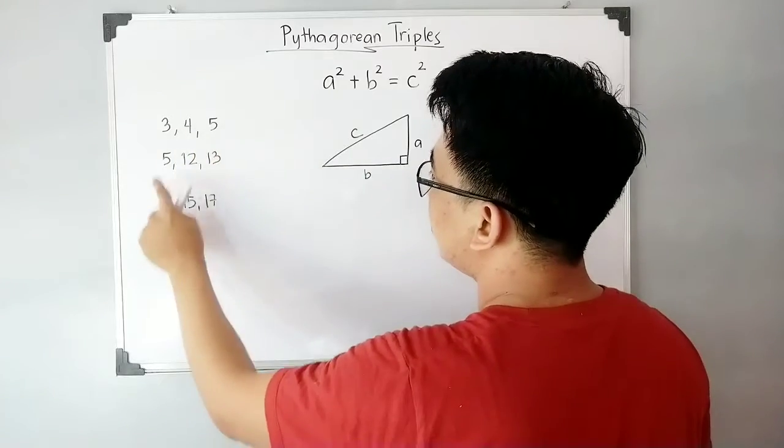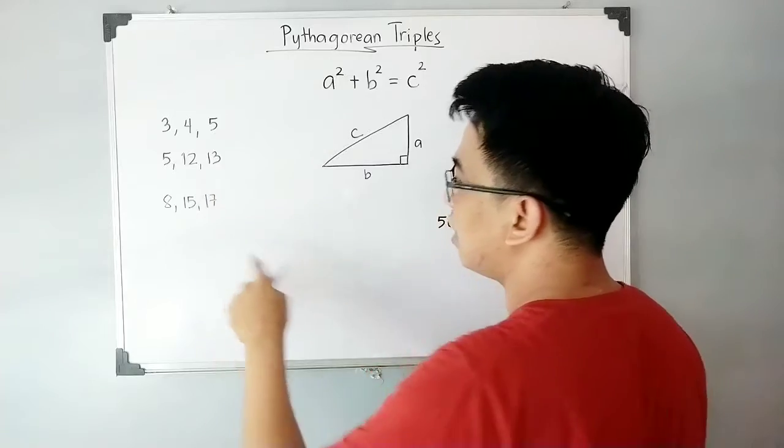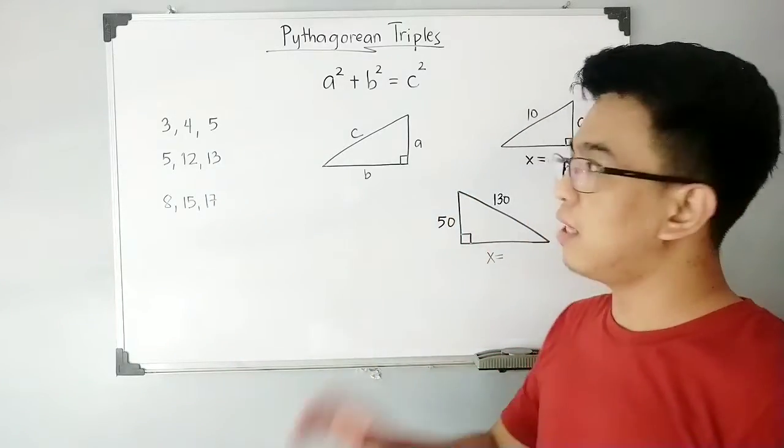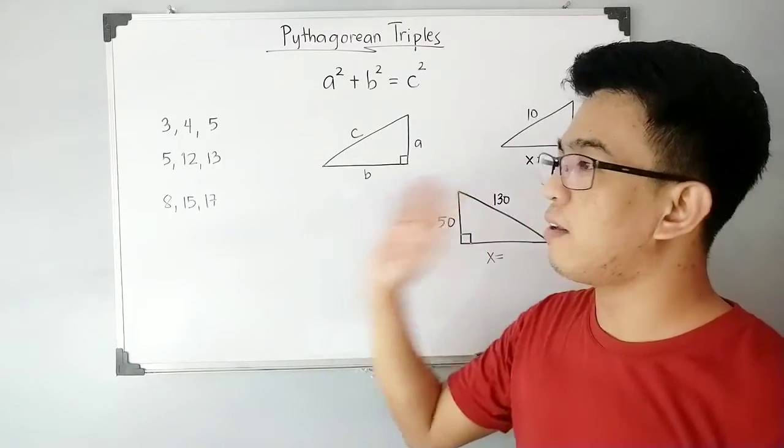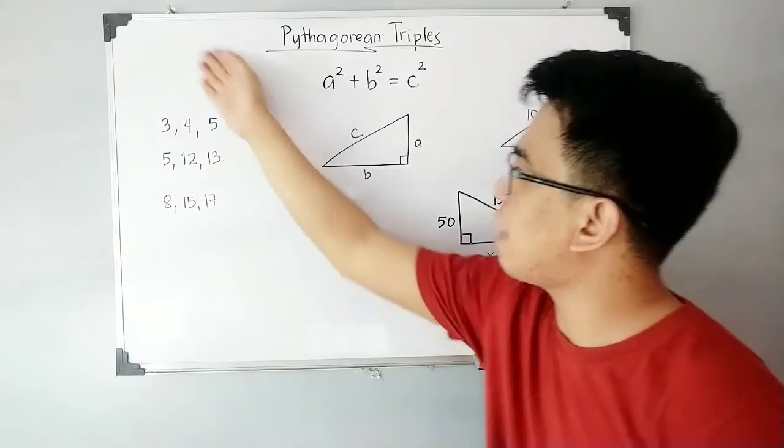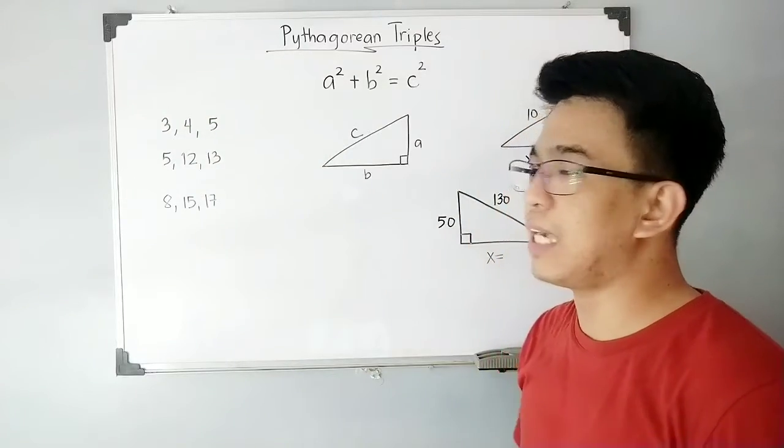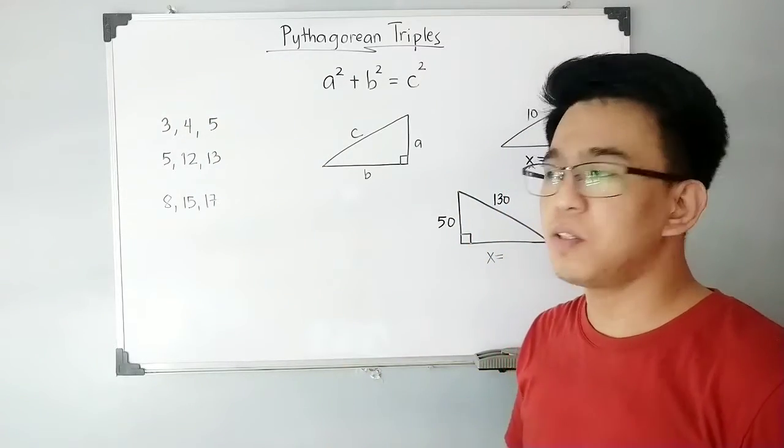Right here on our whiteboard we have 3-4-5, 5-12-13, and 8-15-17. They are not just numbers; these are called Pythagorean triples. These three sets of Pythagorean triples are the most commonly used in mathematics.